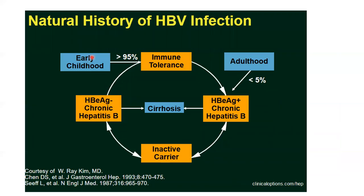The natural history: if infection is acquired in early childhood, patients go through the immune tolerance phase and subsequent stages. Chronic inflammation leads to malignancies — maximum inflammation occurs in the EAG-negative chronic hepatitis phase and EAG-positive chronic hepatitis phase. These are the two phases with maximum risk of inflammation and HCC development. HCC can also develop through insertional mutagenesis, where cccDNA integrates with the host genome and undergoes spontaneous mutation.